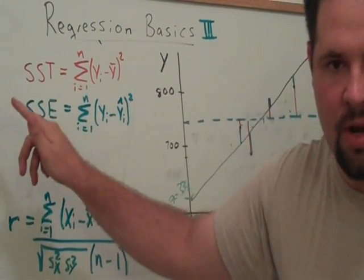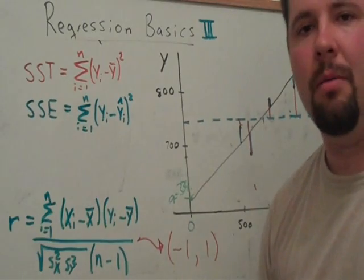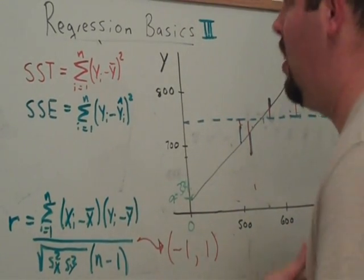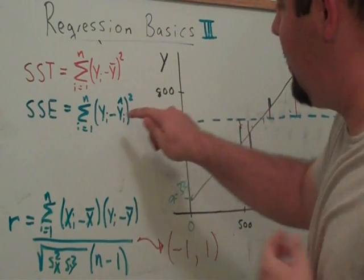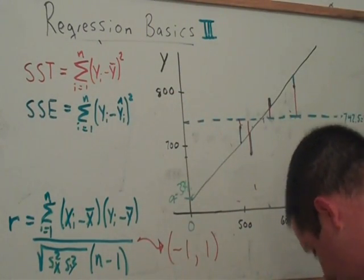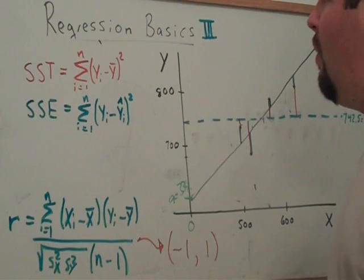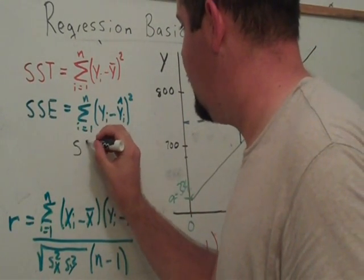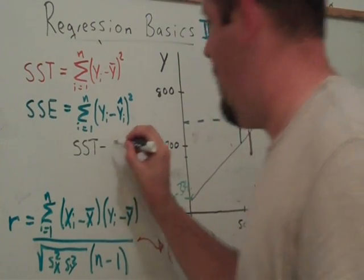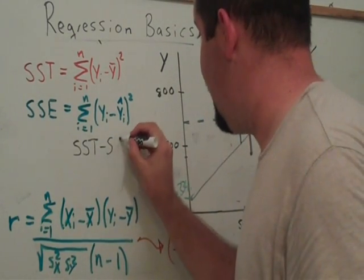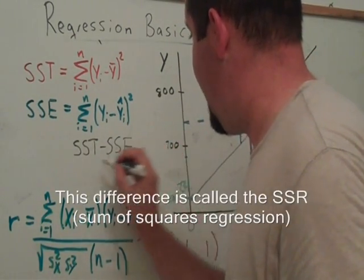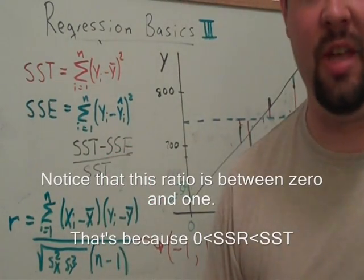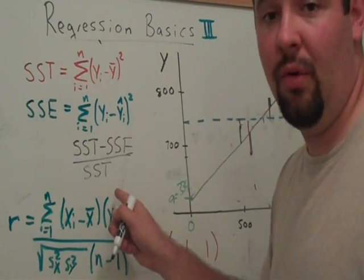And that's kind of our goal with regression is to explain away this sum of squared total. So the smaller the sum of squared errors is, the better job that we've done in explaining the variability in our response variable. And so here is our sum of squared errors. And so what does that mean when that's small? Well, one measure for that is we can take the sum of squared total minus the sum of squared errors and just standardize that by how much we actually had to explain in the first place, the sum of squared total.